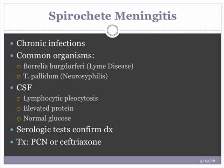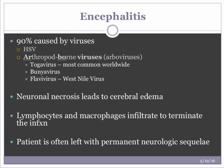Spirochete meningitis consists of chronic infections. Common organisms are Lyme disease and neurosyphilis. CSF shows lymphocytic pleocytosis, elevated protein, and normal glucose. Serologic tests confirm the diagnosis: VDRL for syphilis and Lyme antibody titers for Lyme disease. Treatment is high-dose penicillin or ceftriaxone for several weeks.